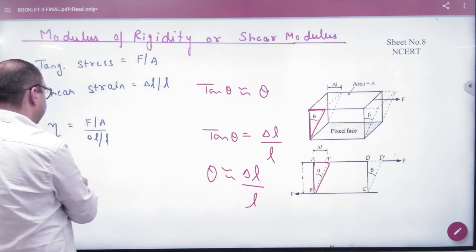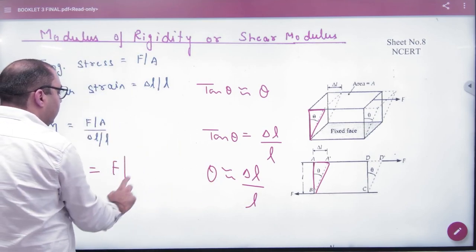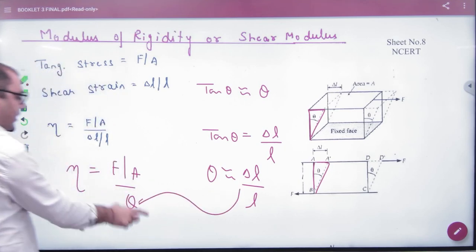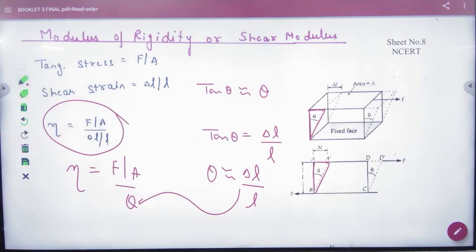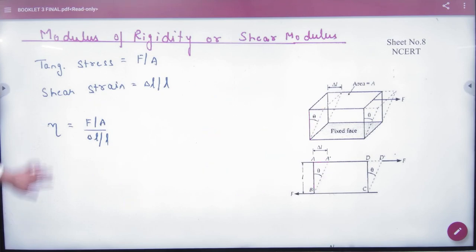Because eta is stress divided by strain. If we put theta in the place, delta L by L, then this will be a formula. So how do you solve the shear modulus problem? I will show you how numerical is solved.